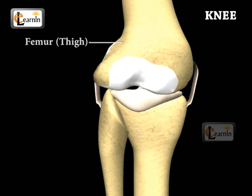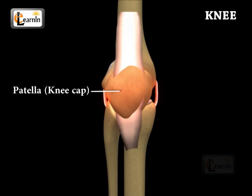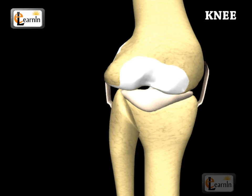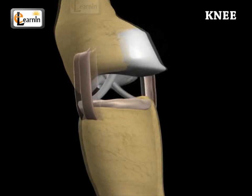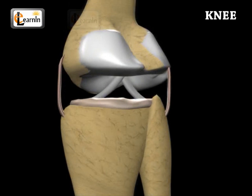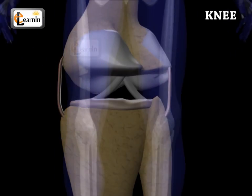The knee consists of two crucial bones in the knee region, which include the femur, or the thigh bone, and tibia, also known as the shin bone. The knee is protected by the patella, also known as the kneecap. The knee joint has a cushioning support provided by the articular cartilage, which protects the ends of the thigh bone, shin bone, and the kneecap. They mitigate the direct stress on the knee joint and also act like shock absorbers between the bones and the knee.